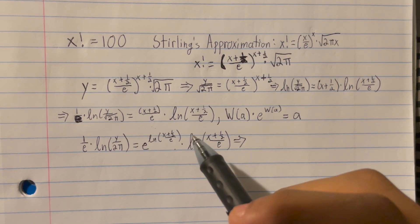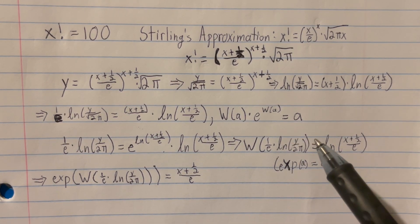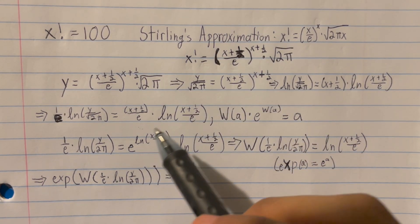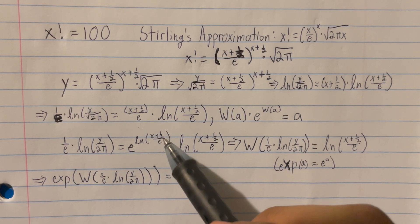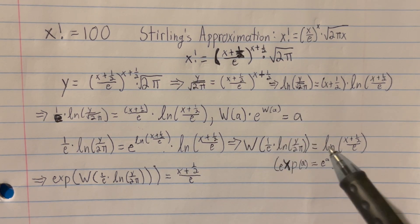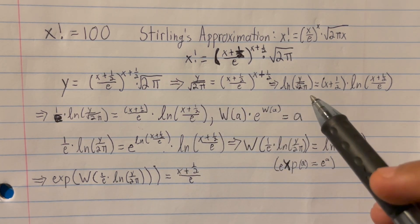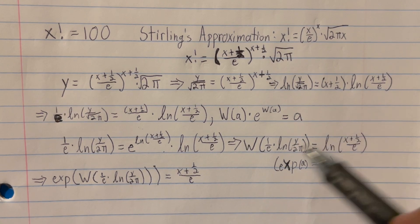Taking the Lambert W function on both sides, the left-hand side becomes W(1/e · ln(y / (2π))), while the right-hand side simplifies to ln((x + 1/2)/e) — since the Lambert W function applied to an expression of the form a · e^a just outputs a. We then exponentiate both sides (take e to the power of both sides) to remove the natural log, giving us (x + 1/2)/e on the right-hand side.